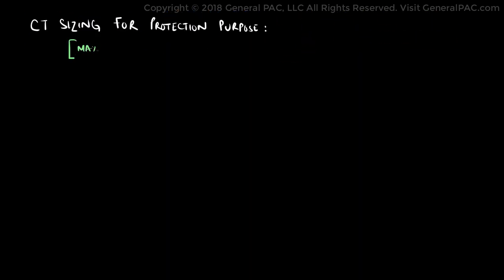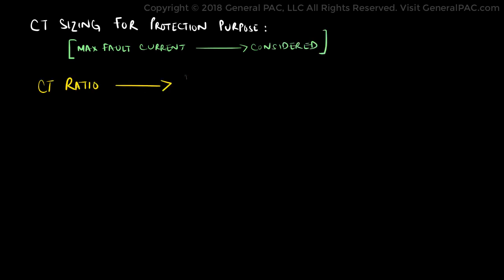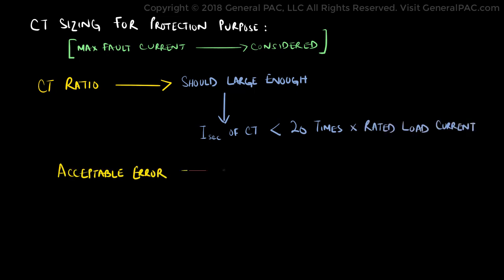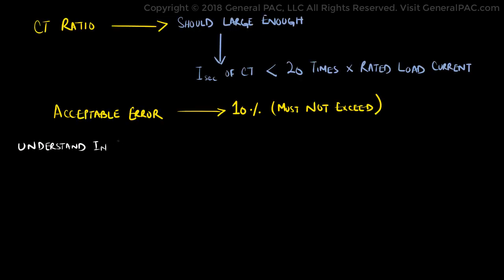Maximum fault current should be considered when sizing a current transformer for protection purposes. The current transformer ratio should be large enough so that the CT secondary current does not exceed 20 times rated current under the maximum symmetrical primary fault current, while the acceptable error of 10% is not exceeded. This is a bit difficult to understand at first, but let us break this statement down briefly.